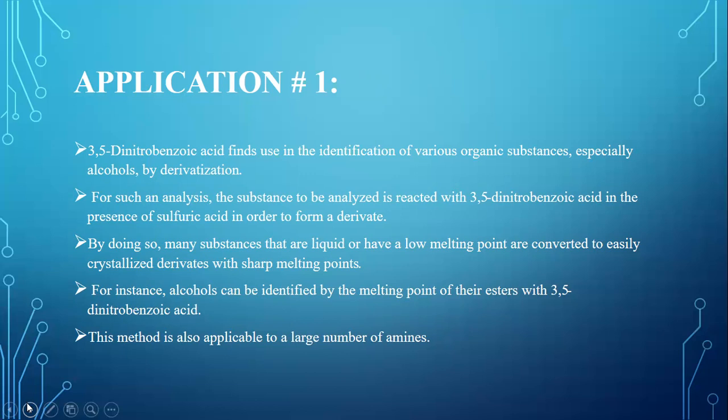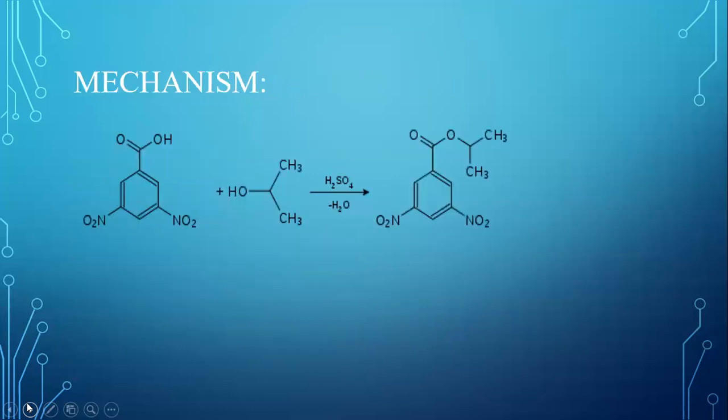alcohols can be identified by their esters reacted with 3,5-dinitrobenzoic acids. Here you can see the mechanism of how 3,5-dinitrobenzoic acid reacts with alcohol in the presence of sulfuric acid and forms the derivate of the alcohol.